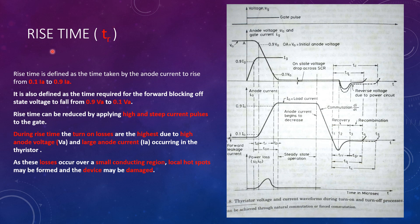We will now learn rise time, denoted by TR. Rise time is defined as the time taken by the anode current to rise from 10% of its final value to 90% of its final value. As seen here, during rise time the anode current rises from 10% to 90% of its final value. It can also be defined as the time required for the forward blocking voltage to fall from 90% of its initial value to 10% of its initial value.